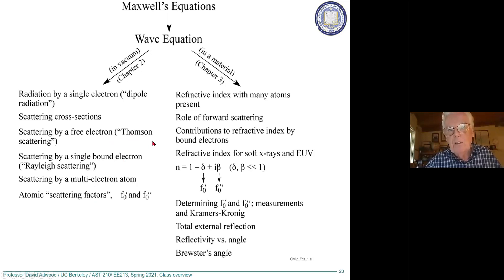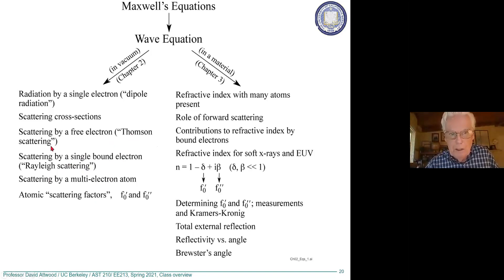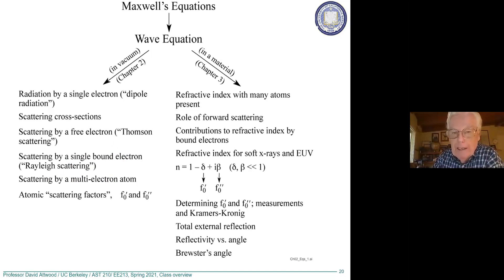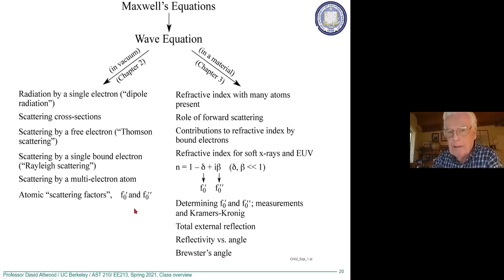We'll look at a single free electron — called Thompson scattering — then a single bound electron, which would be Rayleigh scattering. We'll talk about the blue sky and red sunset. Then the multi-electron atom: what matters is how large the wavelength is compared to the atom's electron distribution, and this is where we can discuss small-angle vs. large-angle scattering and the role of coherence.